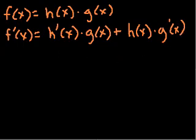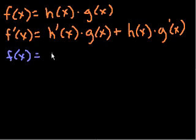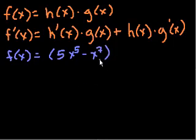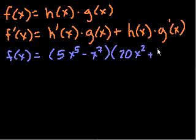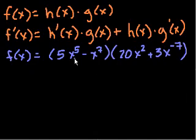Let's apply it. So let's say that f of x is equal to 5x to the fifth minus x to the seventh, times 20x squared plus 3x to the minus 7. One way we could have done it is to just multiply this out and then take the derivative like any polynomial. But let's use this product rule.